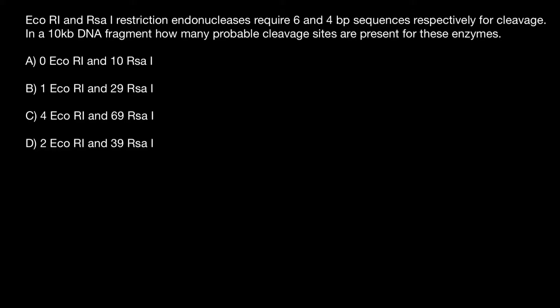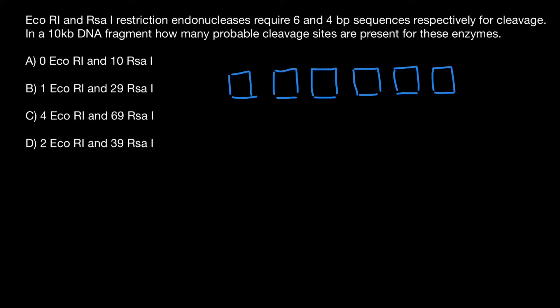Let's say that this empty box — each empty box — represents a position on the double-stranded DNA where we can find a certain base. We need to find the probability that EcoRI, which recognizes six bases on the double-stranded DNA and cleaves somewhere in between, would find a certain sequence if we take a random fragment of the double-stranded DNA.